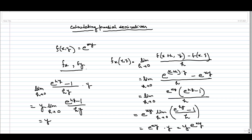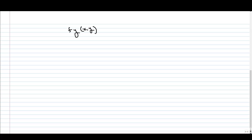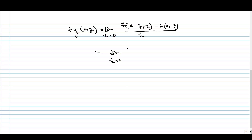Similarly, now we will do the calculation for the partial derivative with respect to y. When we want to calculate fy, we get the limit as h tends to 0 of [f(x, y+h) minus f(x,y)] divided by h. We change the increment in terms of y, so it becomes e^(x(y+h)) minus e^(xy), divided by h. You can see that the roles of x and y are interchanged, so following the same steps as before, we get x times e^(xy).